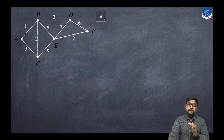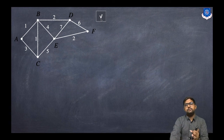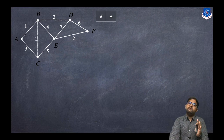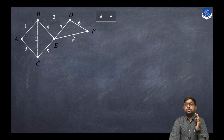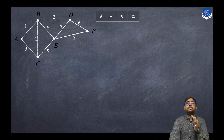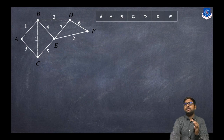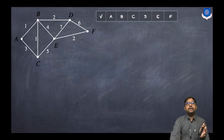The first step: V means the vertex we have visited. In each column we will write every vertex name — A, B, C, D, E, F. There are six vertices total. You can write the vertices in any order.